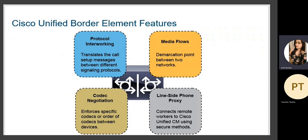Some key features of CUBE are: protocol inter-networking, which translates call setup messages between different signaling protocols; media flow, which acts as a demarcation point between two networks; line-side phone proxy, which connects remote workers to CUCM using secure methods; and codec negotiation, which enforces specific codecs or a preferred order of codecs between devices.